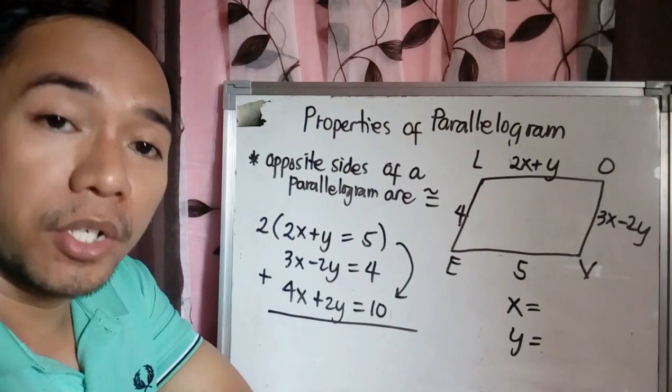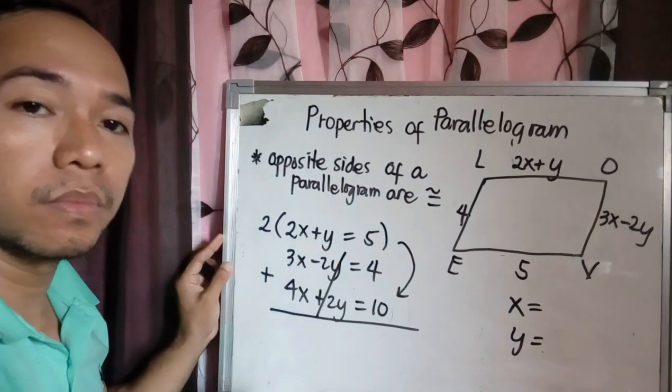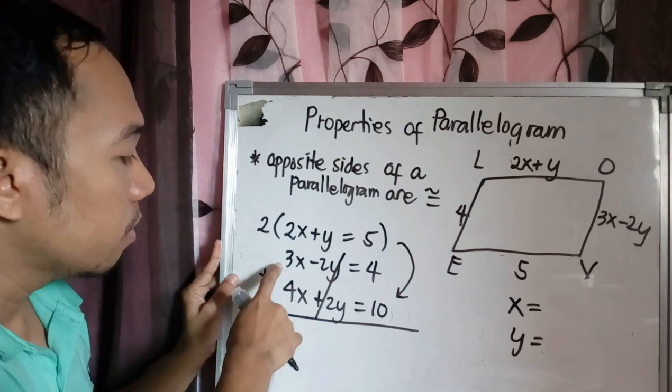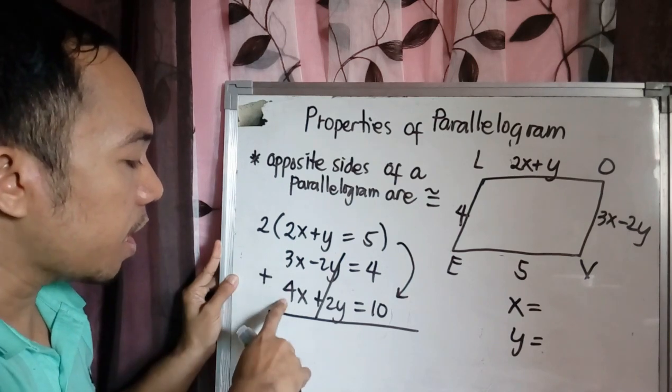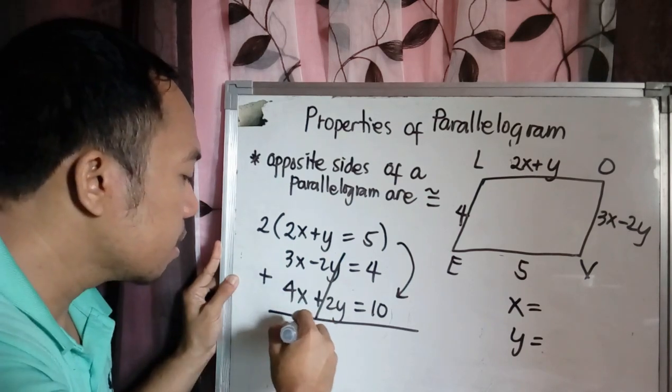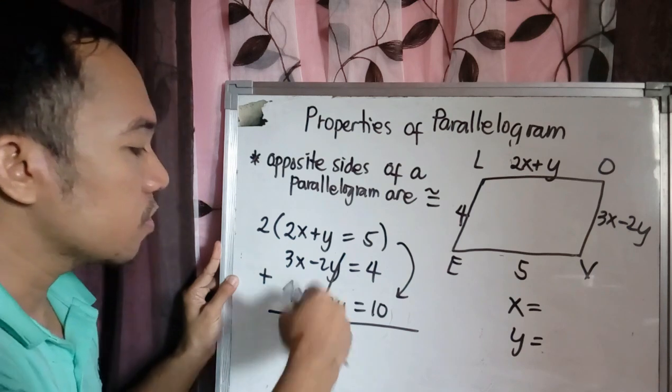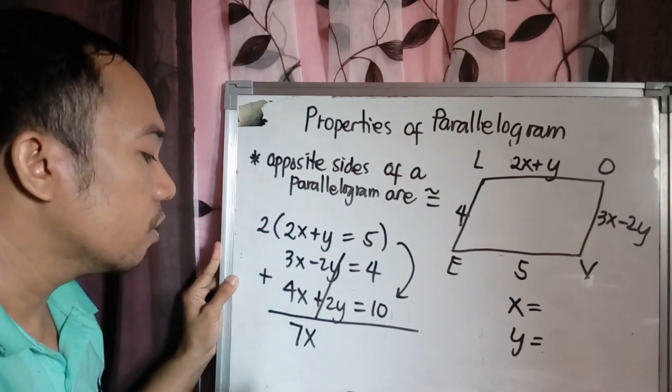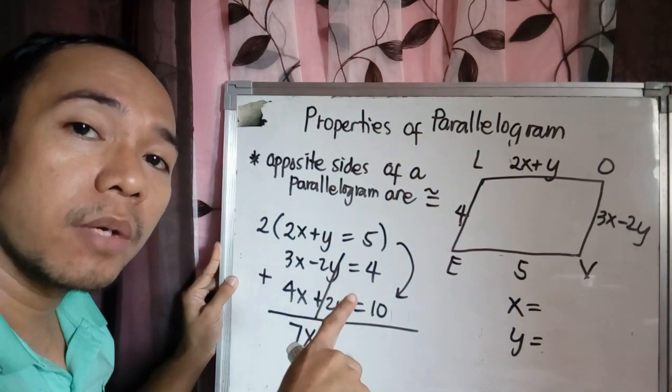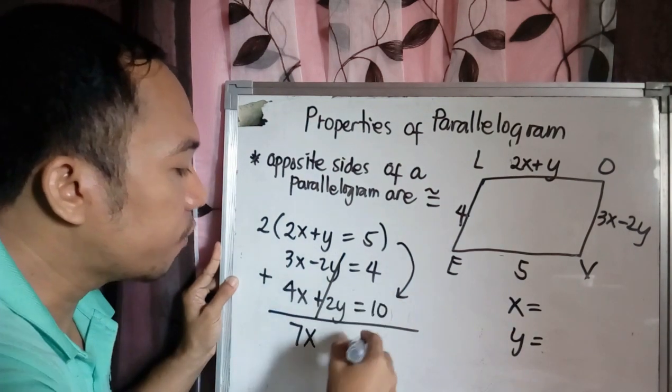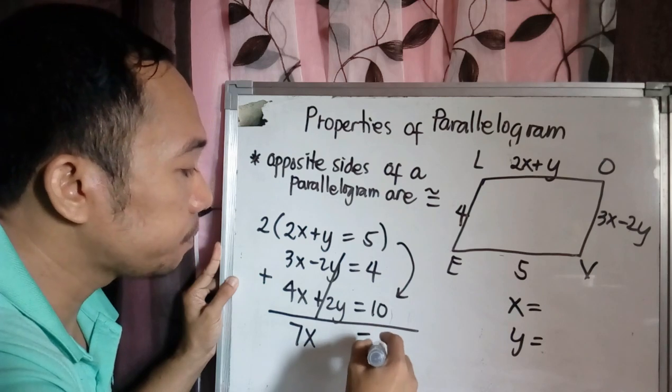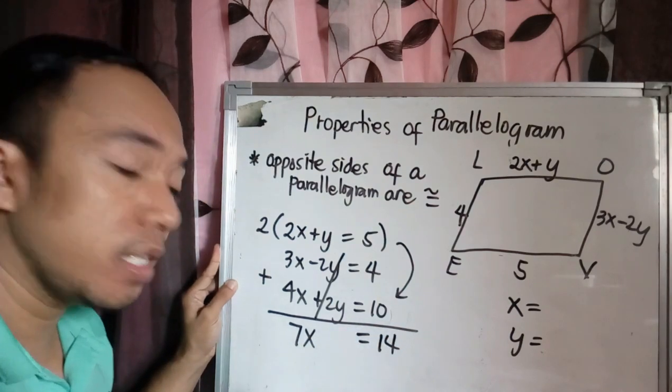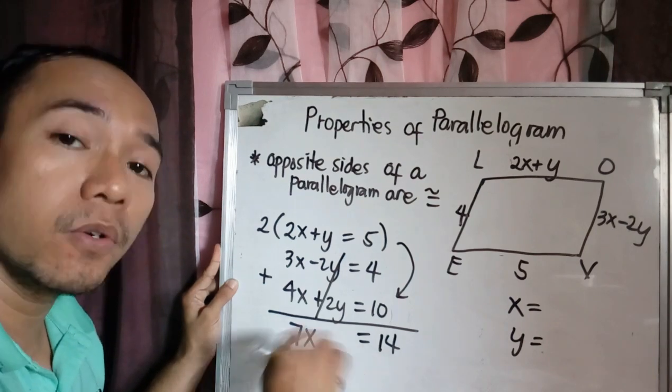And 3X plus 4X equals 7X. So your Y is eliminated. So you have now single variable, which is X. Then add 4 plus 10, you have 14. By division property of equality, we will divide 7 both sides.